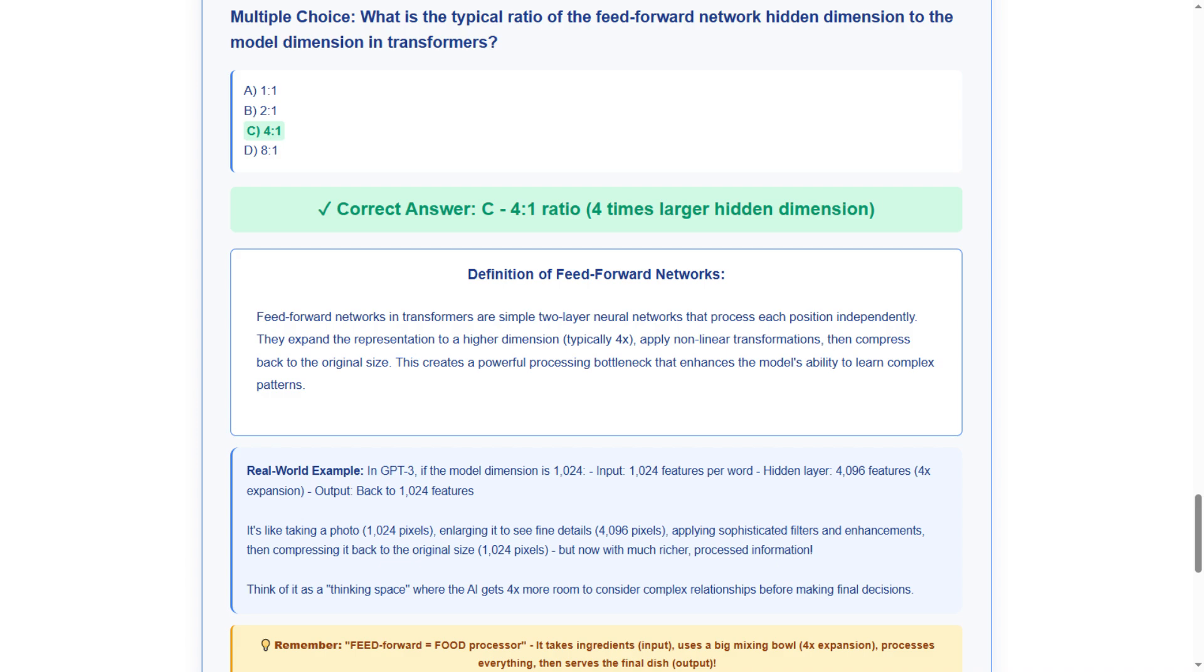The layman explanation shows this works like photo editing, taking a 1,024-pixel photo, enlarging it to 4,096 pixels to see fine details, applying sophisticated filters, then compressing back to 1,024 pixels with much richer processed information. This demonstrates enhancement through expansion.